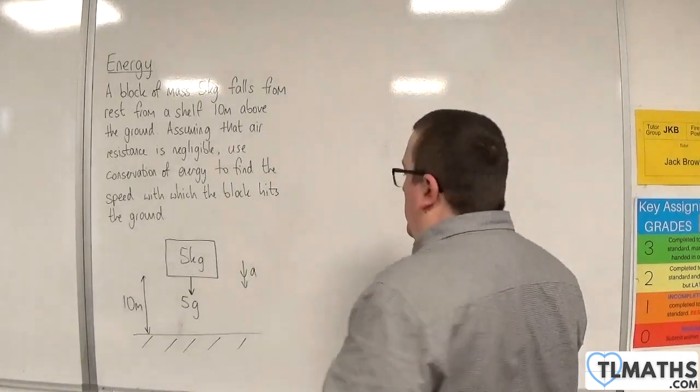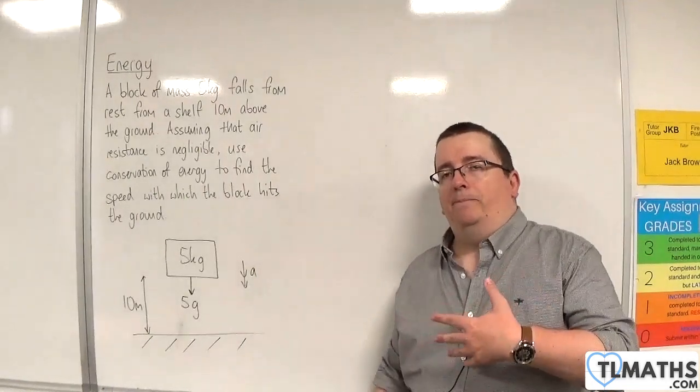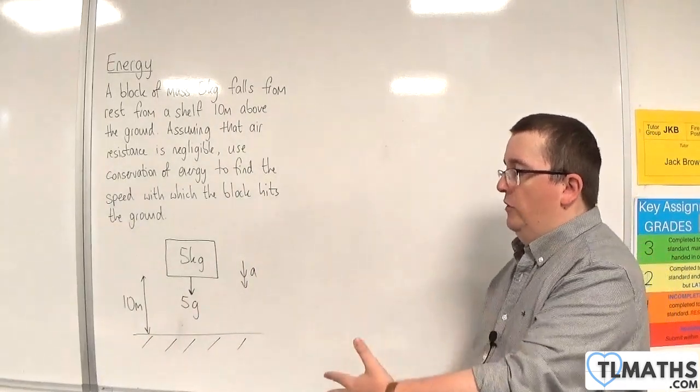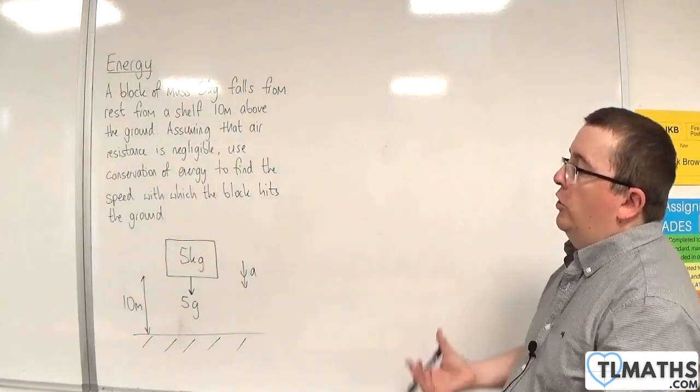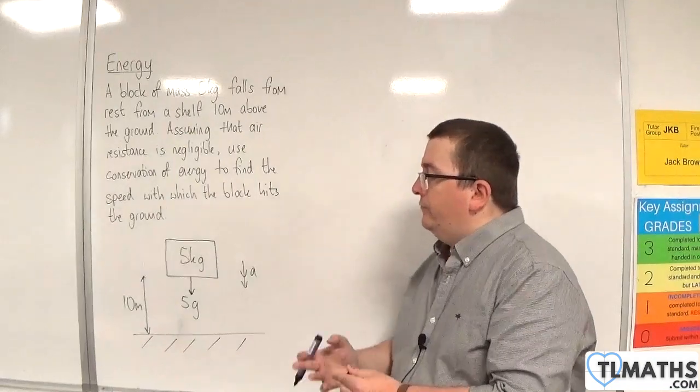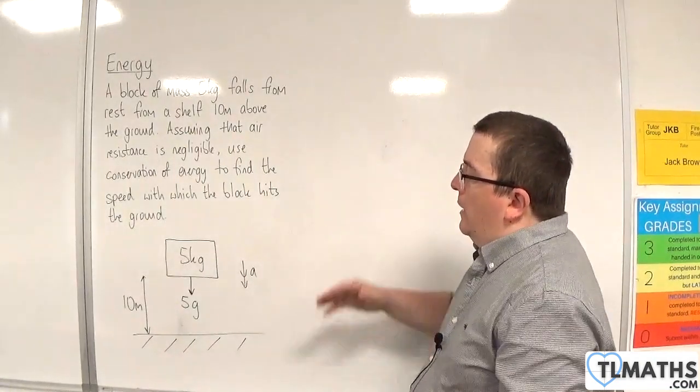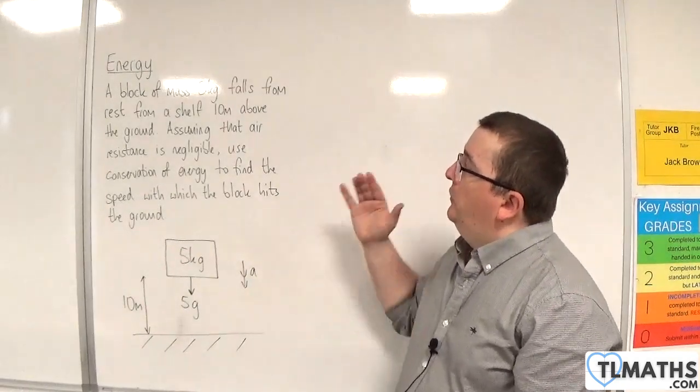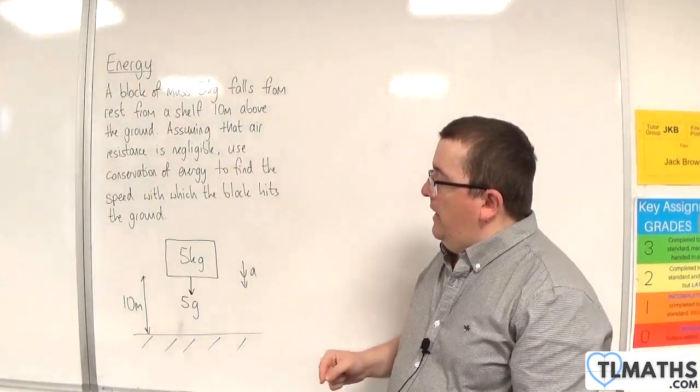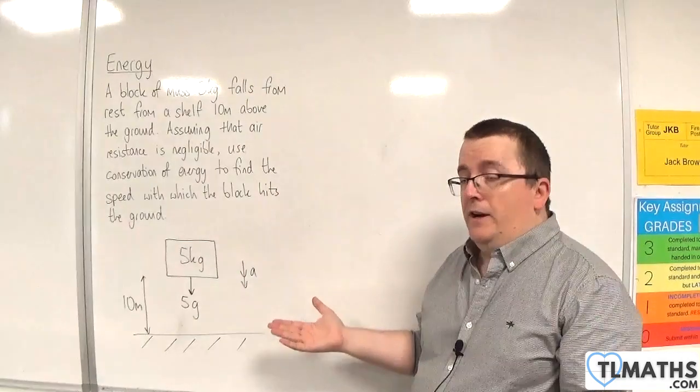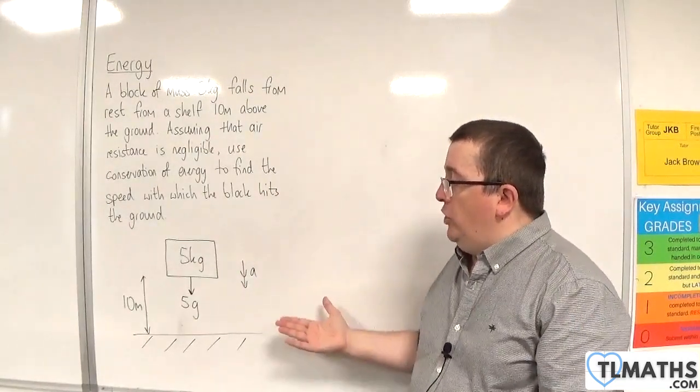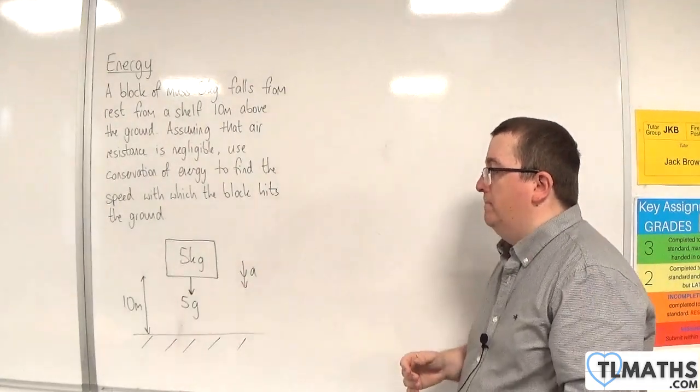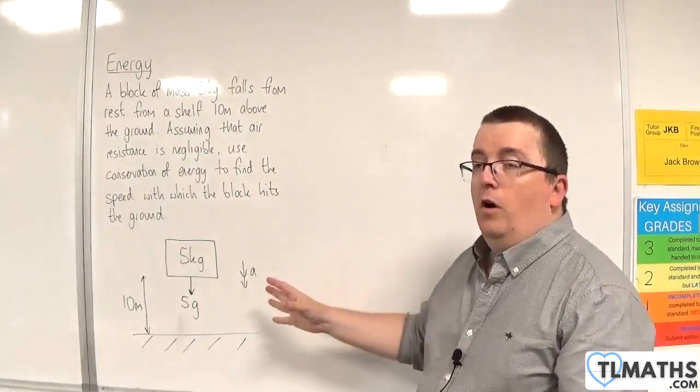Okay, so if you're going to do this just with A-level maths, and that's all the knowledge that you have, then you could do this using SUVAT. So you would put S as 10, U as 0 because it's starting from rest, V is what we want to find out, and the acceleration will be G, because it's going to be accelerating just due to gravity. And then you could work out V.